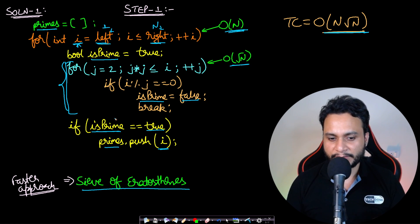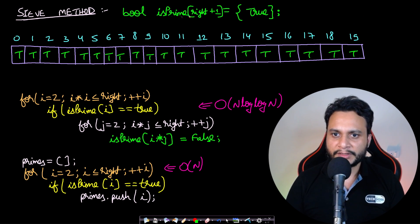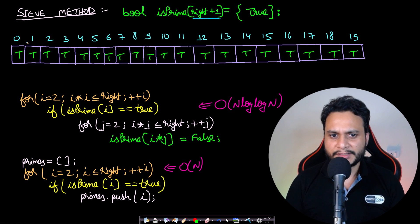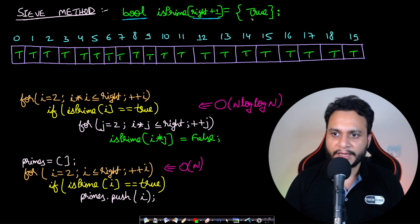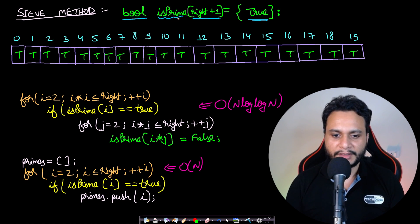Let's do a dry run using the Sieve method. I take a sieve array of size right + 1, since array indices start from zero. I use a boolean array called 'is_prime' and assign all values to true, since initially we assume all numbers are prime.